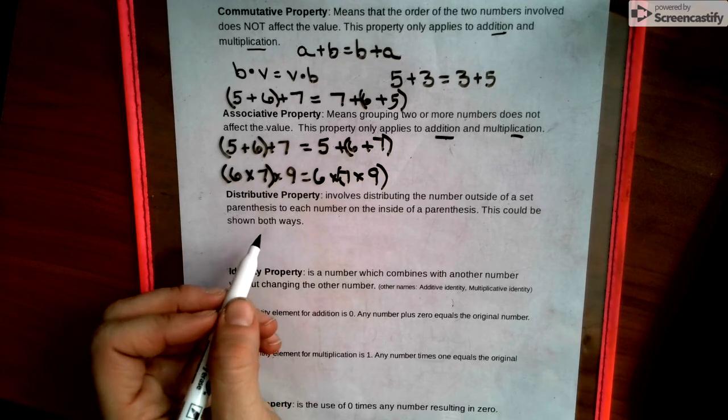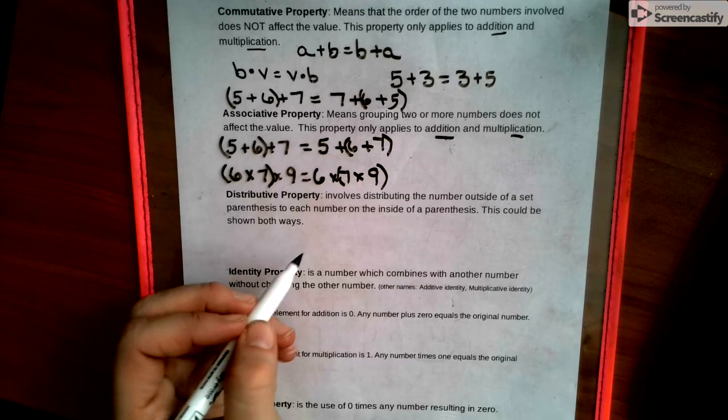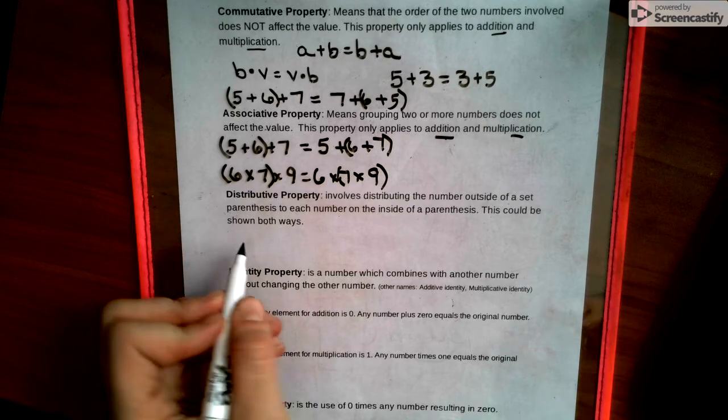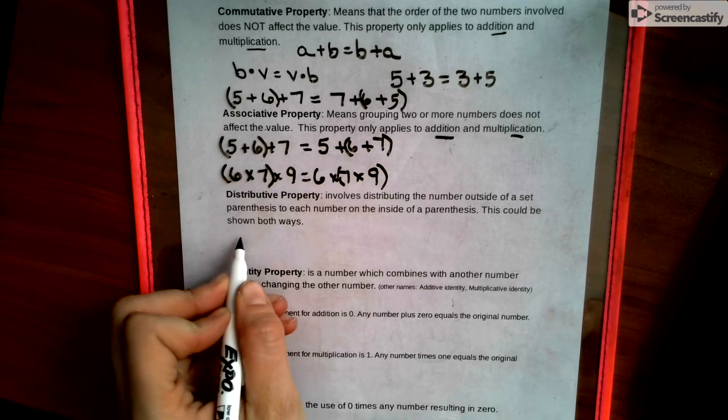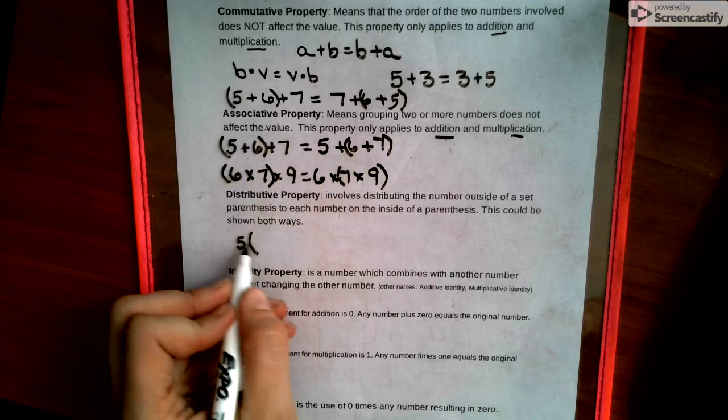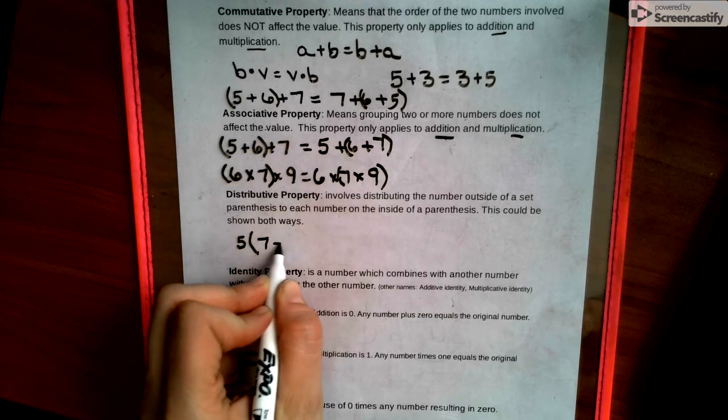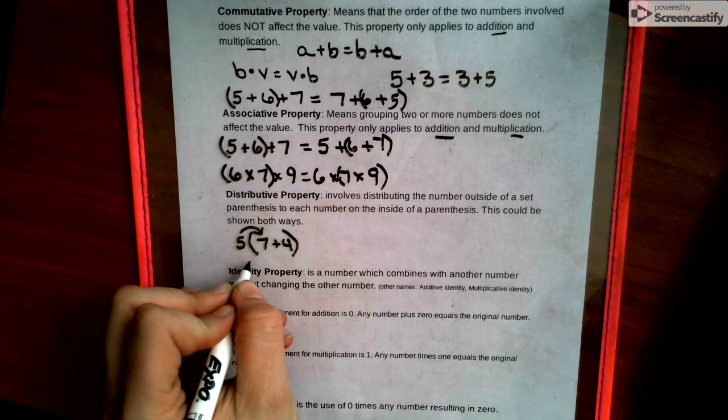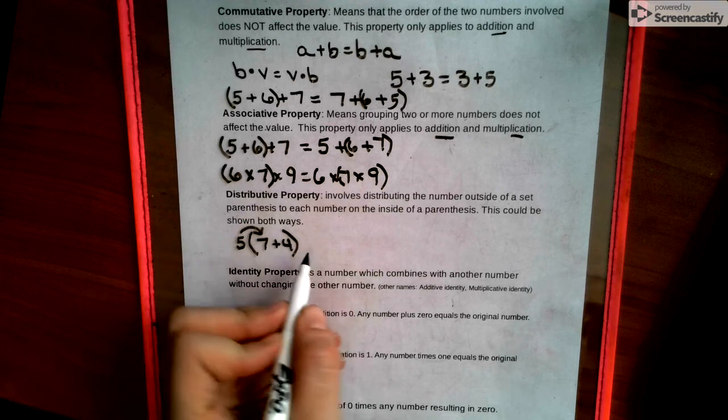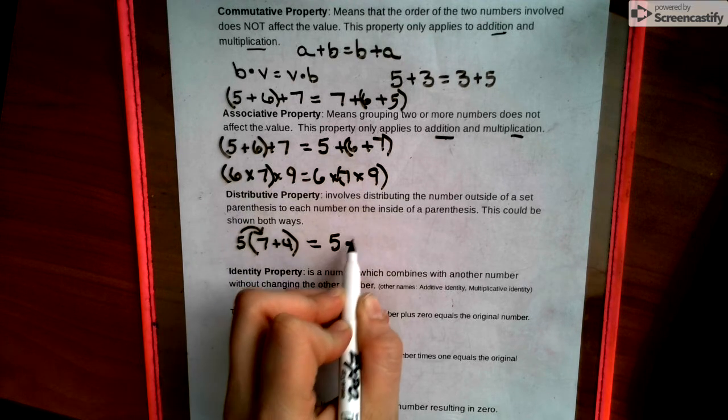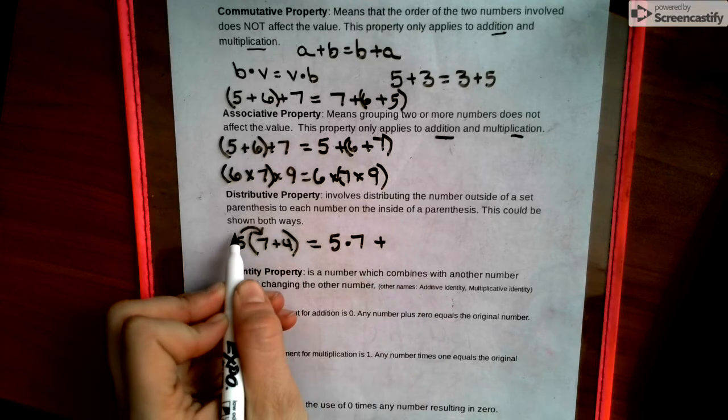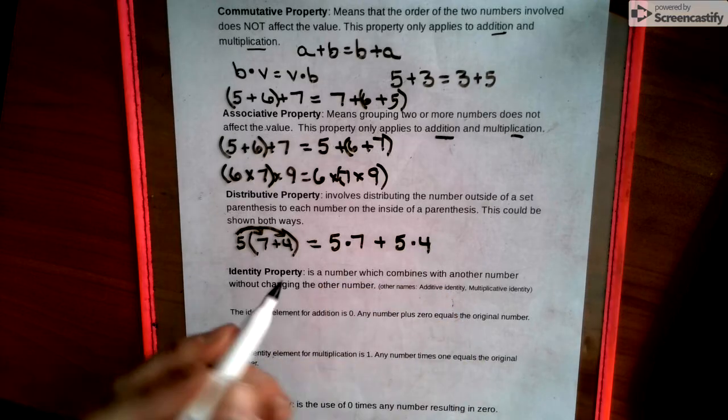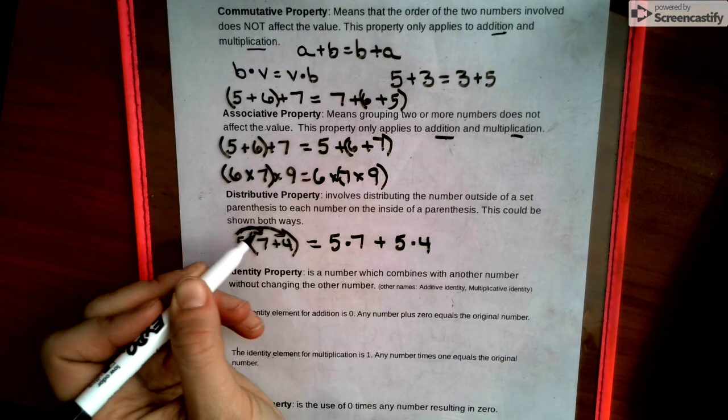Distributive property involves distributing the number outside of a set of parentheses to the numbers inside the parentheses. And there's a couple of different ways to show this, but one way to show this would be something along this line. So we'd have five multiplied by seven plus four. And distributive property means I give the five to the seven by multiplication, and so I would show it as five multiplied by seven plus, and then I would give the five to the four. So I'd have five times four. So I gave this outside number to both the seven by multiplication and also to the four by multiplication, kind of like a mailman bringing mail to this house and then to this house.